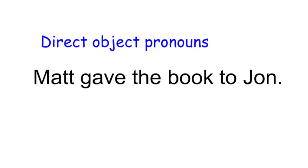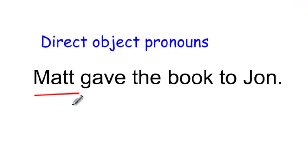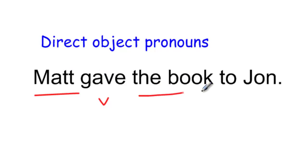Let's look at a sentence like this: Matt gave the book to John. Where is our subject? Our subject is Matt — he is the one performing the action, he's the one conjugating the verb. Here's our verb. So we have our subject Matt, and now we have the book and to John — we've got two elements here.